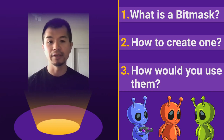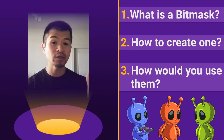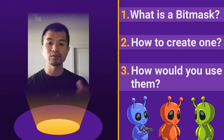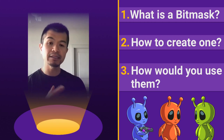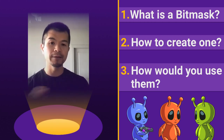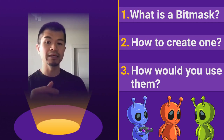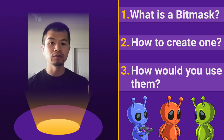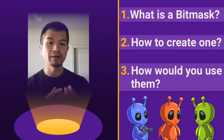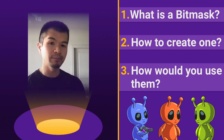We're going to look at three things: what a bitmask actually is, how you can create one using JavaScript syntax, and how you would use it for a game. The example is going to be related to those three alien things — the blue guy, the red guy, and the green guy — and how you can use bitmasks to have element types that are either one or multiple types together.